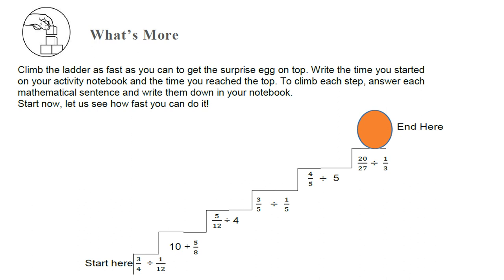Now we have a new activity: Climb the ladder as fast as you can to get the surprise egg on top. You can see a ladder in your module. Before you can climb, you must answer the mathematical sentences. Let's start: 3/4 divided by 1/12; 10 divided by 5/8; 5/12 divided by 4; 3/5 divided by 1/5; 4/5 divided by 5; and 20/27 divided by 1/3. Once you get all the answers, there's a surprise at the egg on top.